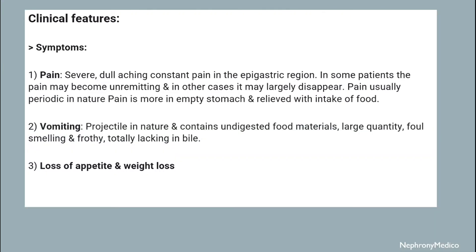The critical features and symptoms: the pain is severe, dull aching, and constant in the epigastric region. In some patients it may be unremitting, and in other cases it may largely disappear. Pain is usually periodic in nature, more in an empty stomach, and relieved with intake of food. Vomiting is projectile in nature and contains undigested food materials in large quantity — foul smelling, frothy, and totally lacking in bile.